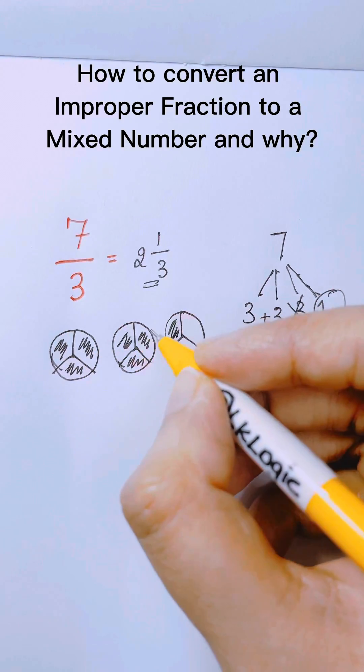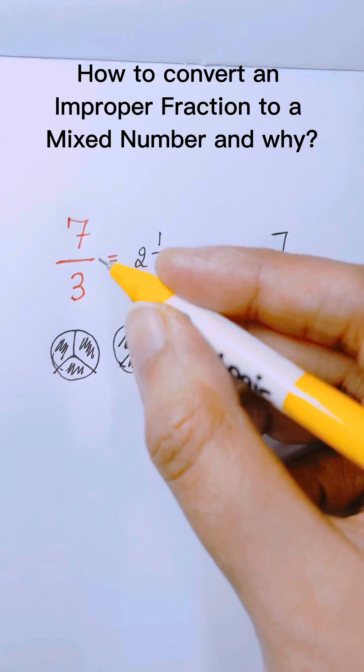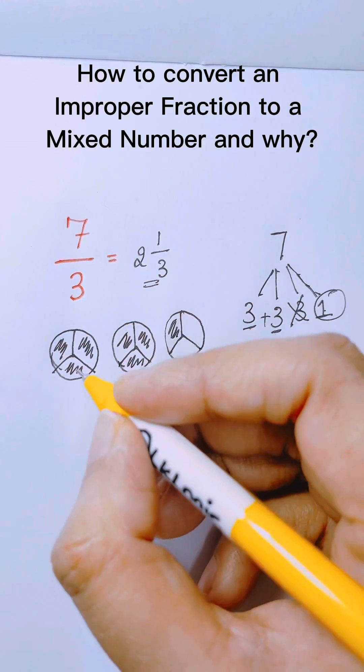So we have 1, 2, 3, 4, 5, 6 and 7. And each hole is cut into thirds.